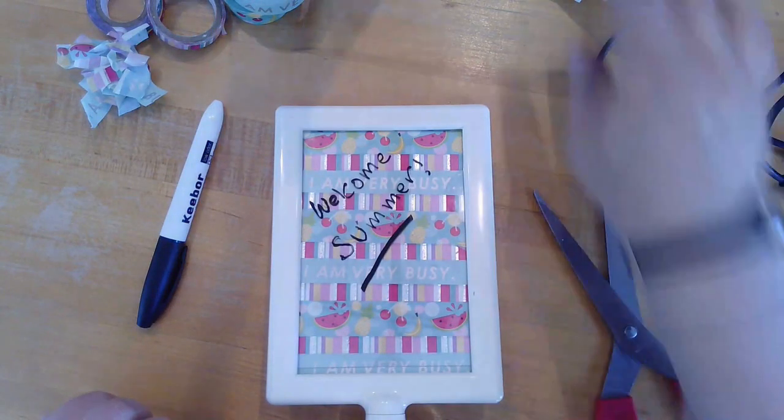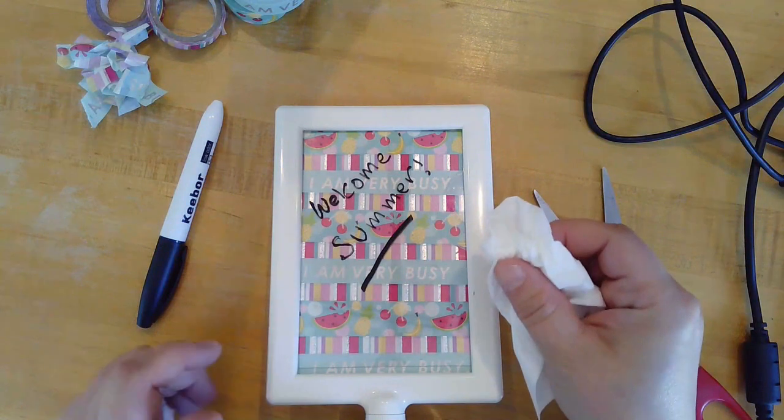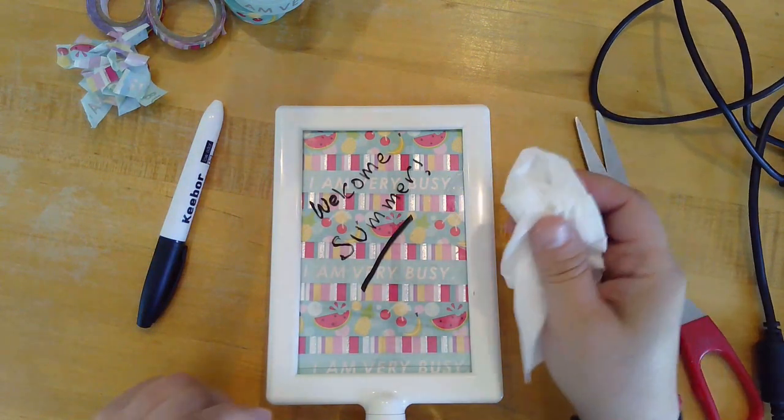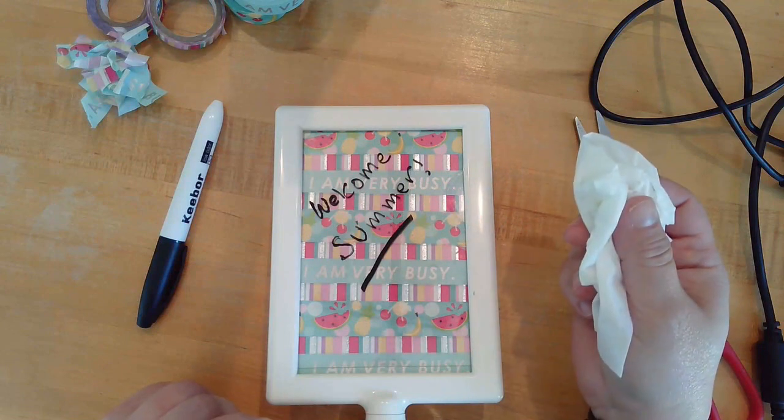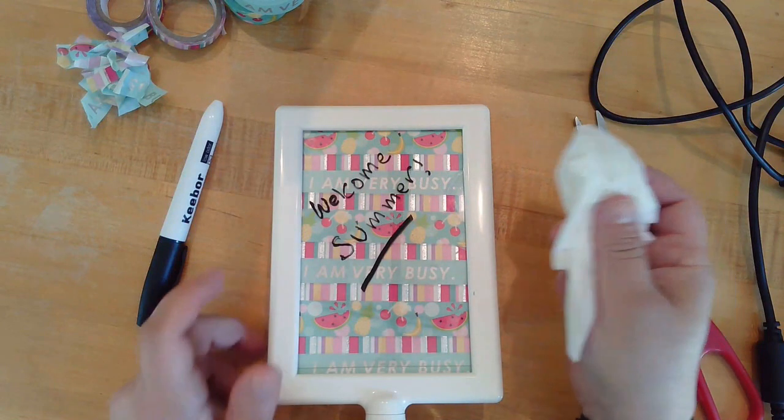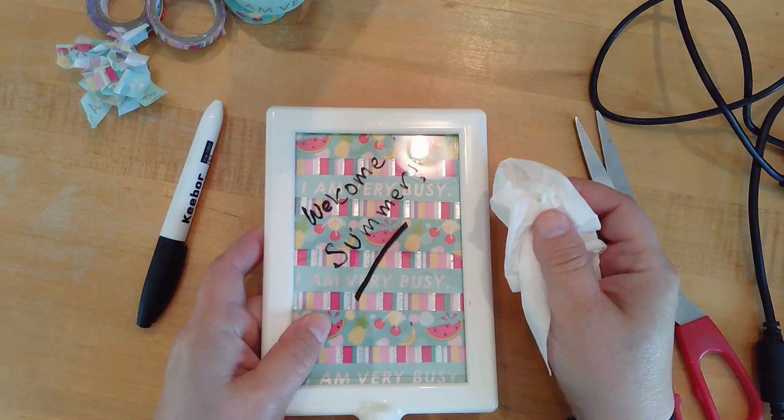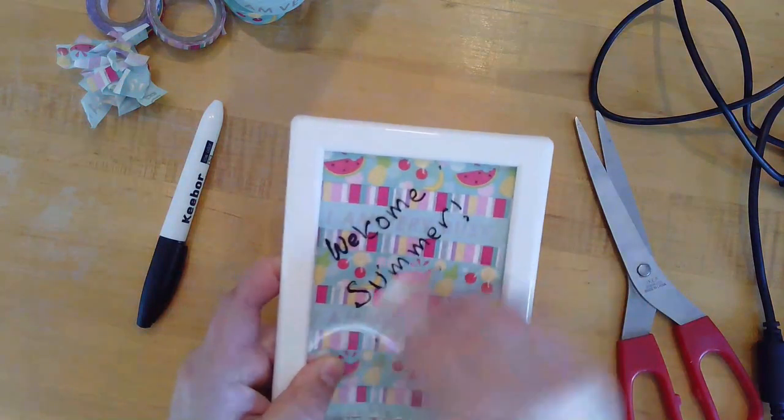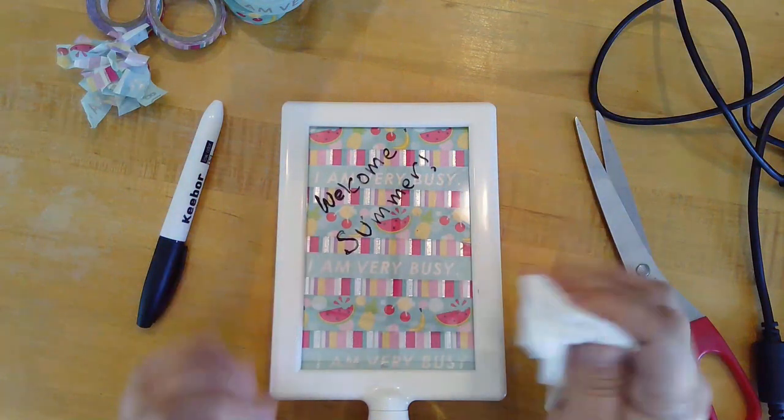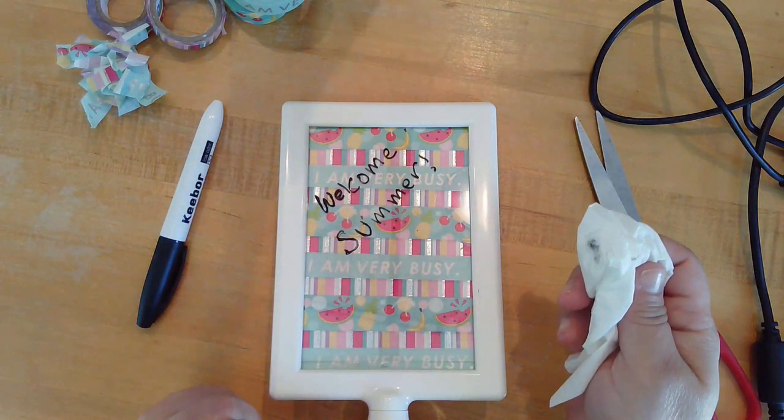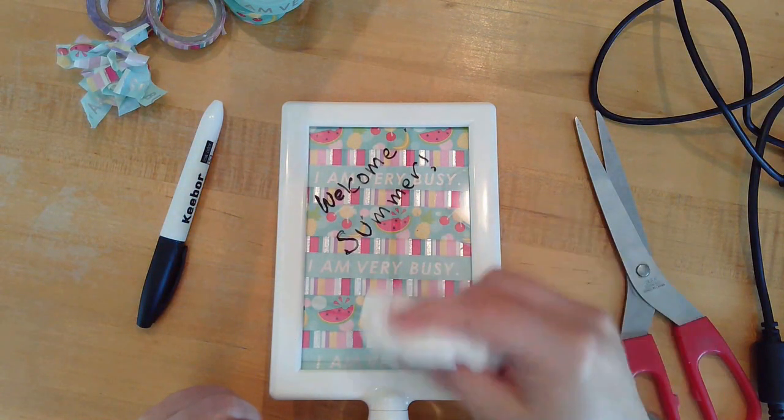Alright. To erase, all you'll need is a piece of paper towel, whatever you want, even a cloth will work. And then you just pull across. If your writing has been on there for quite some time, you may need to dampen your tissue in order to get the writing off.